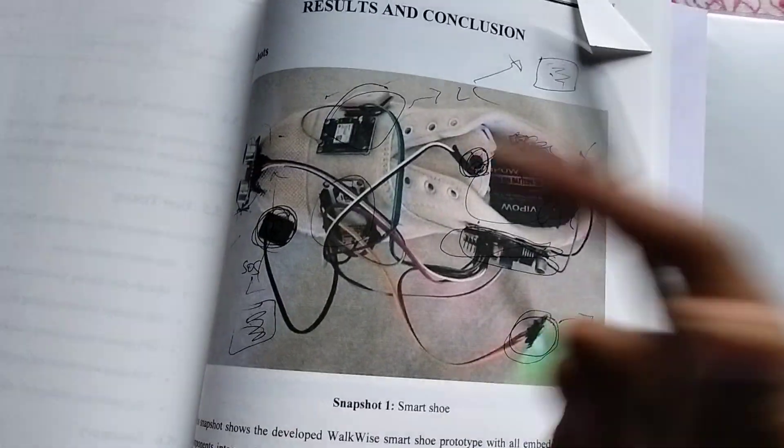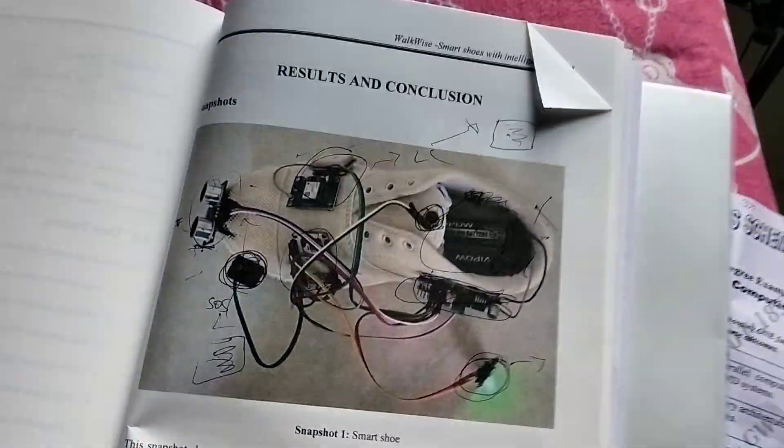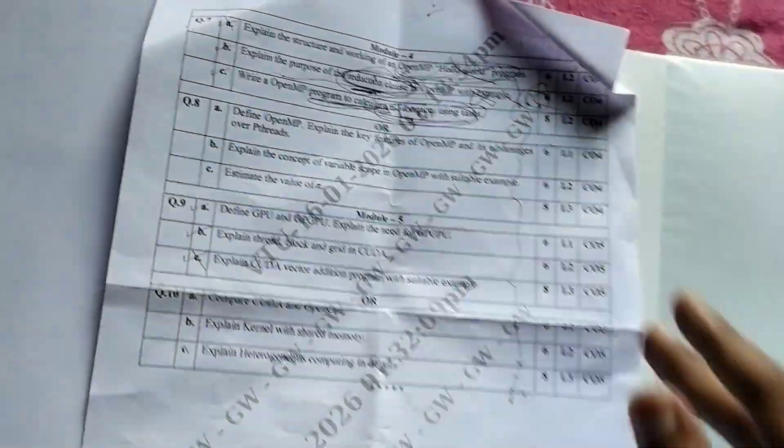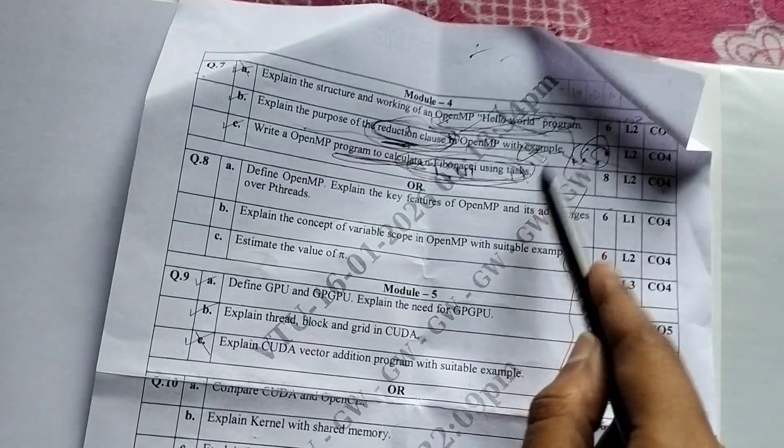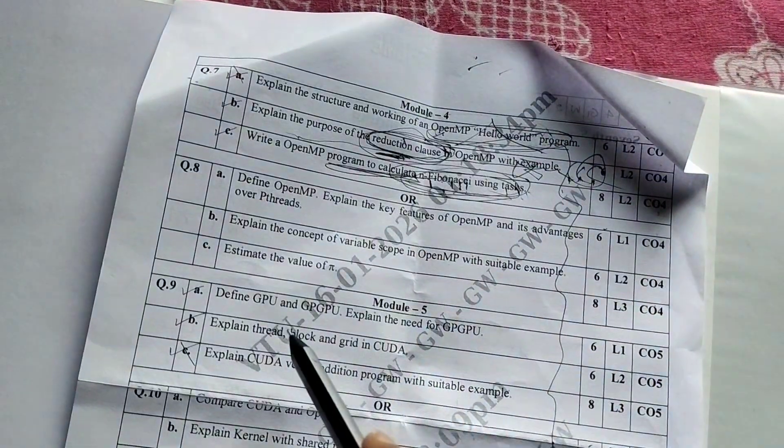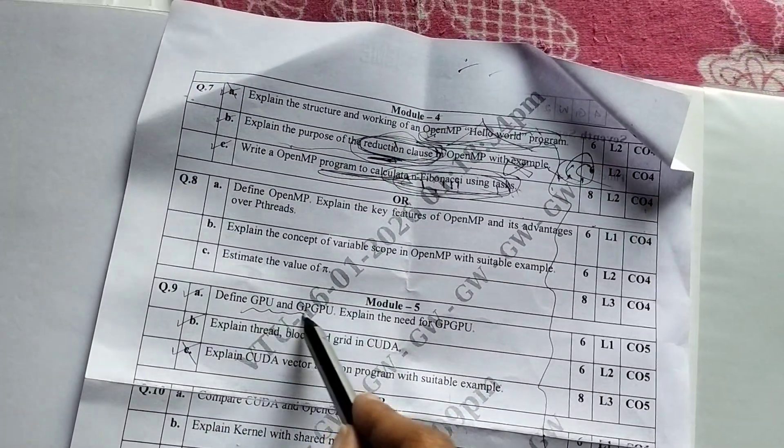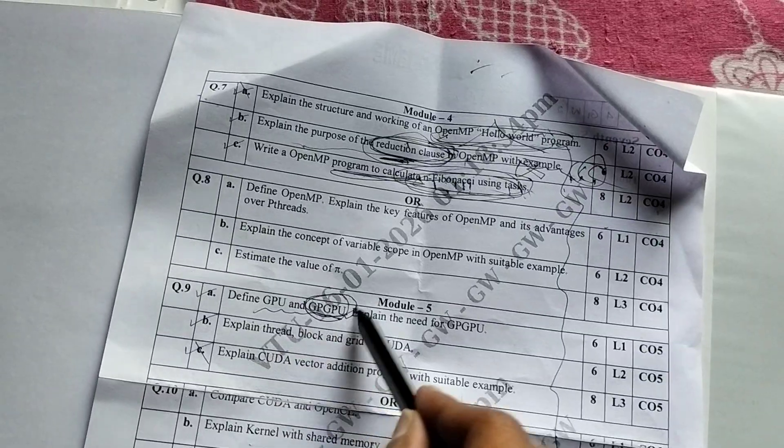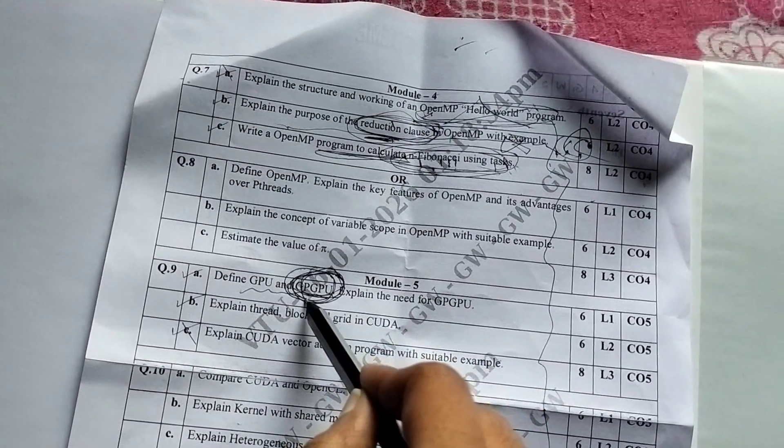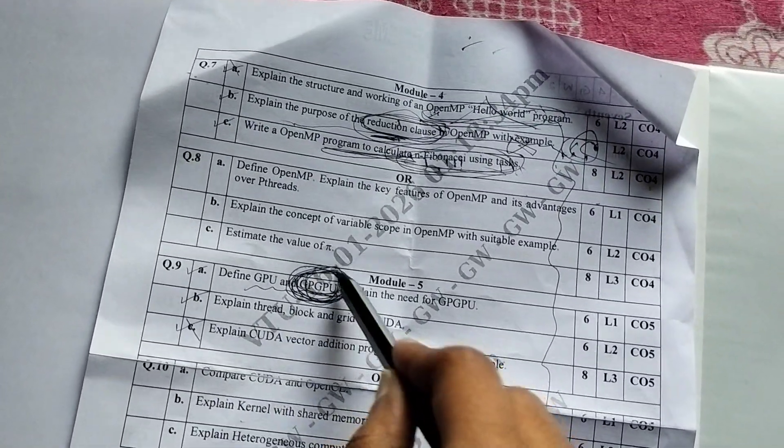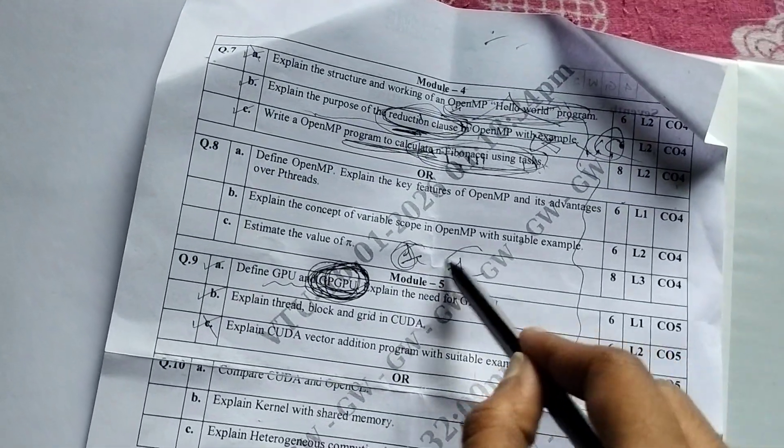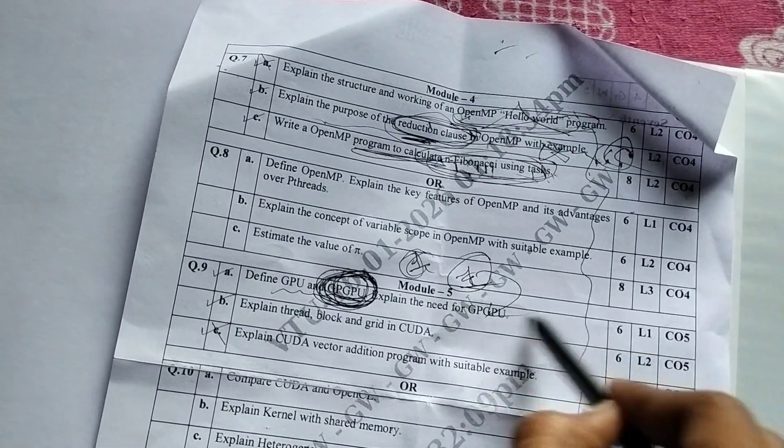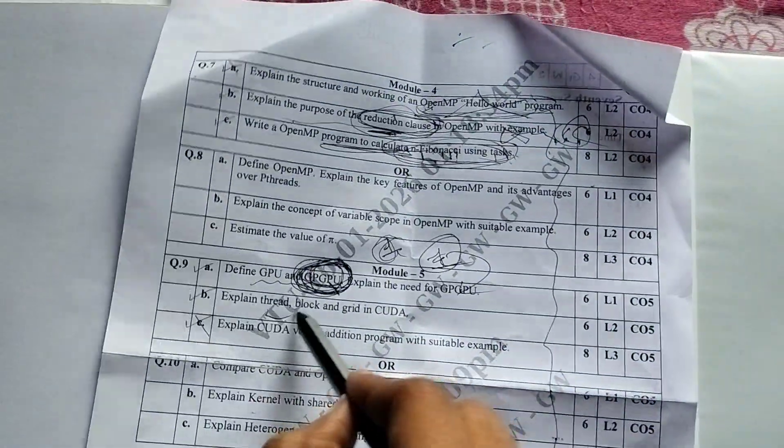So where was I? Yeah, bro, I wrote this Fibonacci - this was there in that handwritten CA notes. And then again, GPU and GPGPU. This I learned today morning. I was like, first question - let me learn, there are high chances that first topic in every module will come. So I learned, and same thing is there. This I had told you to learn in the cheat code video.